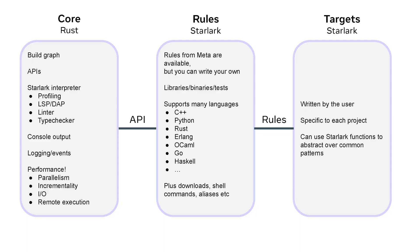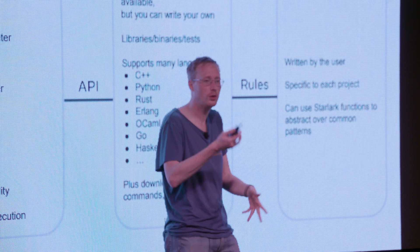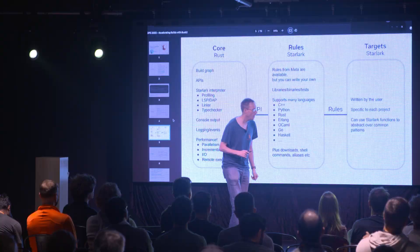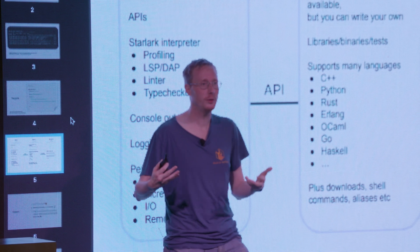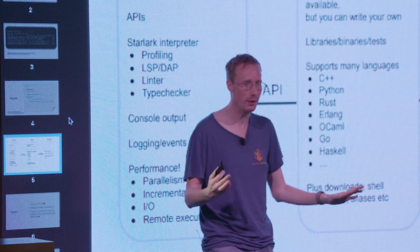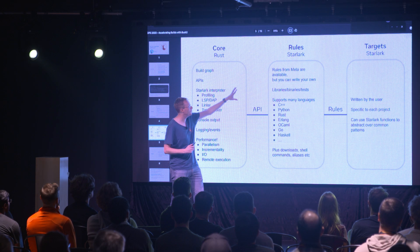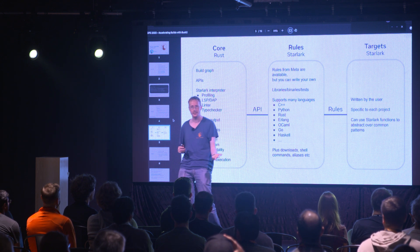Let's look at Buck2's architecture. On one side we have the targets that the user writes — these are specific to your project, written in Starlark, and you can use Starlark functions to create nice wrappers so it works the way you want. Then we have the rules, which define what a Rust library is, what a Rust binary is, what a Rust test is, and the same for C++, Erlang, OCaml, and so on. Meta ships a set of rules for all the languages we build internally, which you can reuse or entirely replace with your own. There are also rules for things like downloads, running shell commands, and aliases.